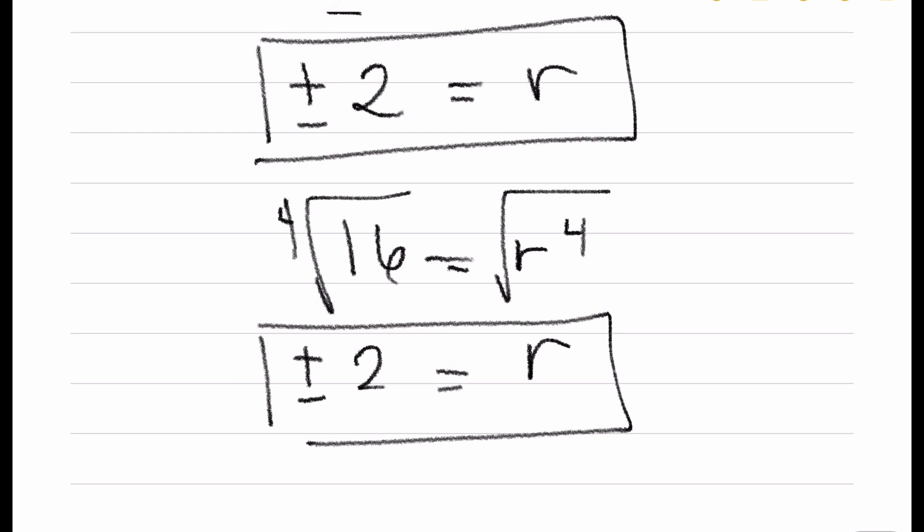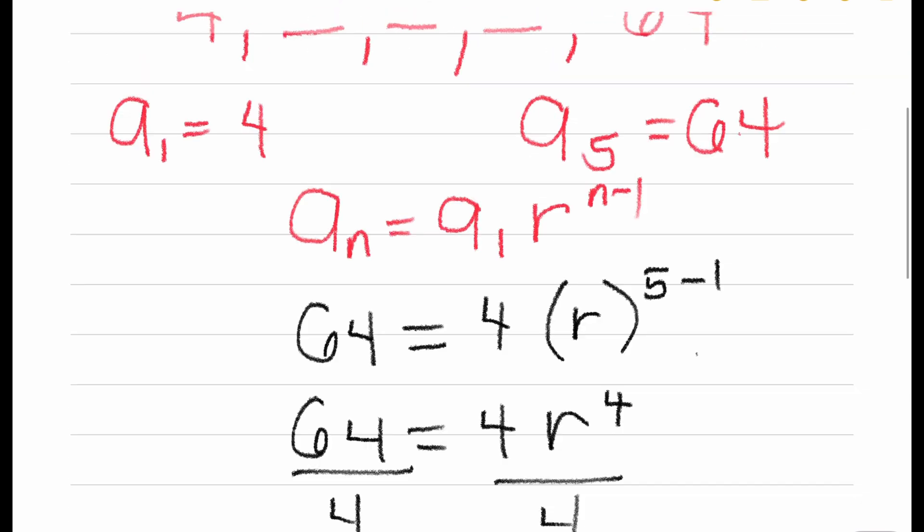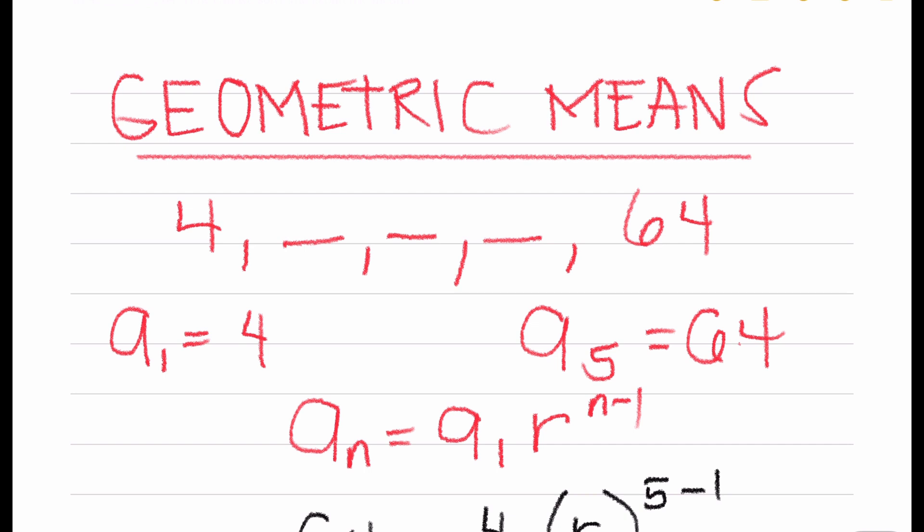Since the common ratio obtained is positive or negative 2, we can now find the geometric means. Just simply multiply the first term by the common ratio of 2. 4 times 2 is 8, 8 times 2 is 16, 16 times 2 is 32, and 32 times 2 is 64. Therefore, the geometric means are 8, 16, and 32.